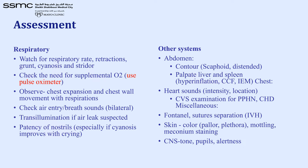To assess these babies, look for respiratory signs — grunting, cyanosis, and stridor. Check supplemental oxygen requirements using pulse oximetry, observe chest expansion, check air entry, and perform transillumination if air leak is suspected. Check nostril patency, especially if cyanosis improves with crying, which suggests choanal atresia. Also assess abdominal contour, palpate the liver, listen to heart sounds, check the fontanelle, skin, CNS including tone, pupil dilation, and alertness.